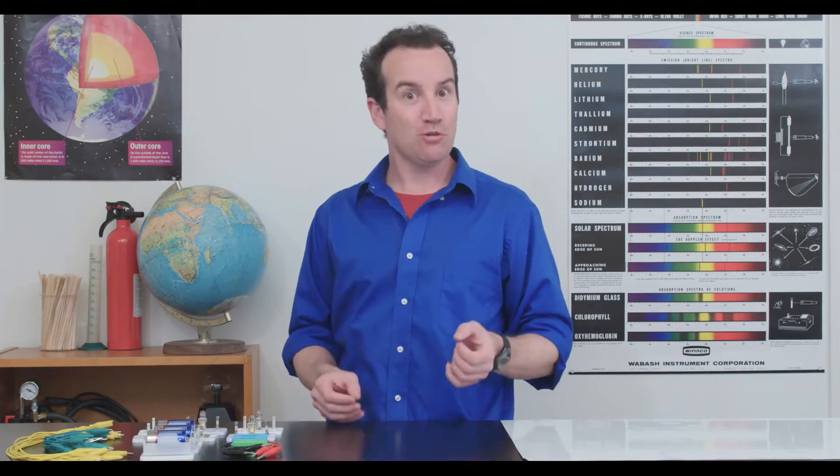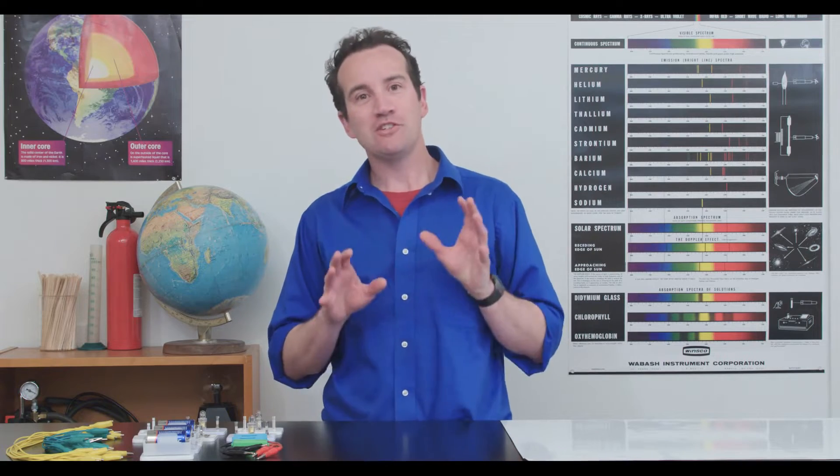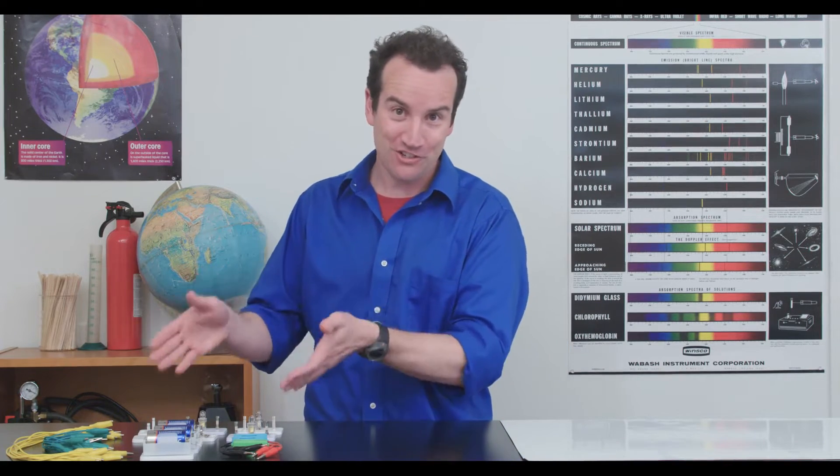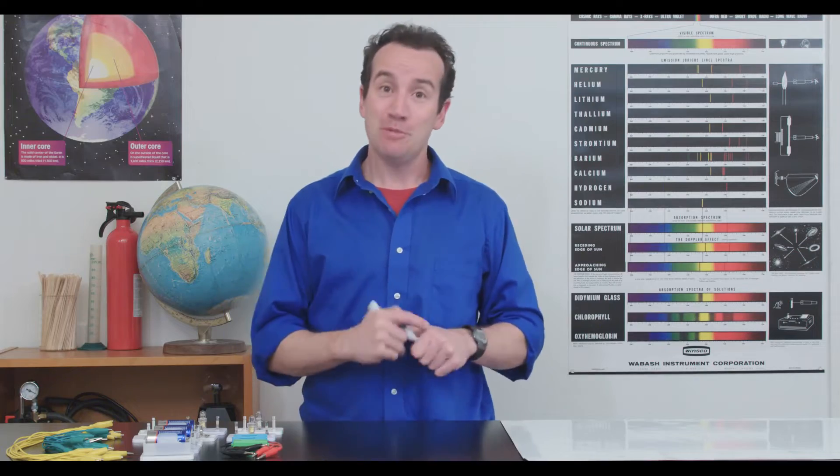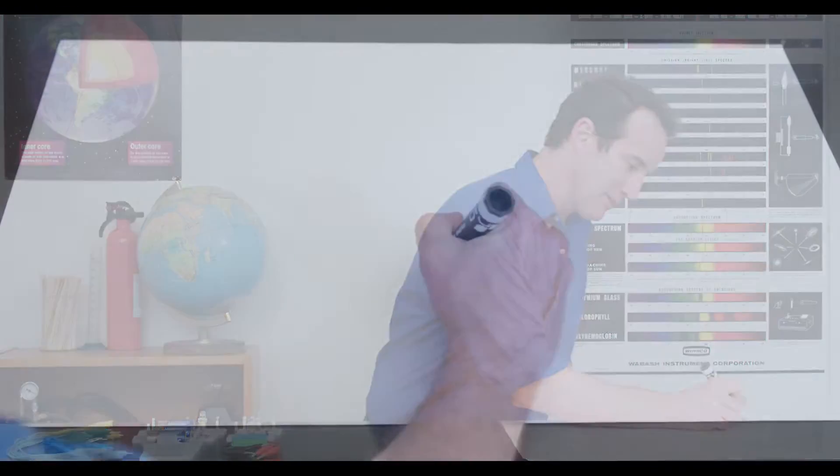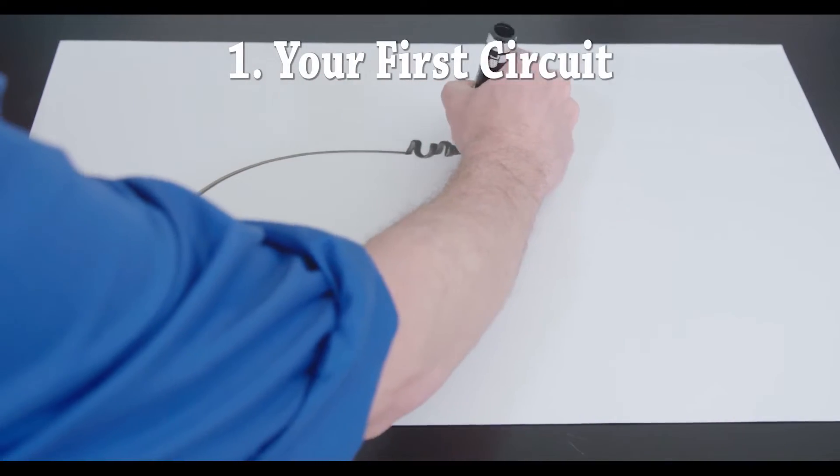They've got these neodymium magnets on the base. So if you would like to learn the basics of electricity or if you've been frustrated with the equipment that you already use, then solve all these problems with the investigating electric circuits kit. Let me show you how it works. Number one: your first circuit.